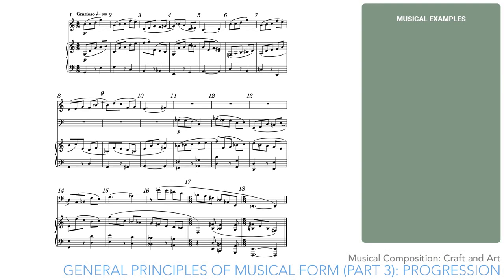For instance, in the first example from our previous lesson, the texture gets gradually lower and thicker. The piano adds octaves when the cello comes in, and then drops into the lowest register at the end.